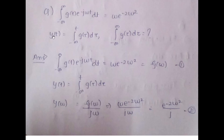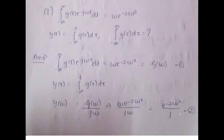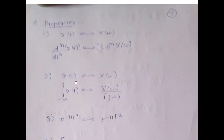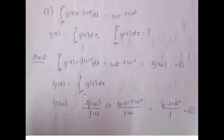y(t) is given as the integral from minus infinity to t of g(τ) dτ. Applying the CTFT integration property — the CTFT of the integral from minus infinity to t of x(τ) dτ is X(ω) / jω — we get Y(ω) = G(ω) / jω. Substituting G(ω) = ω · e^(−2ω²), we have Y(ω) = (ω · e^(−2ω²)) / jω.